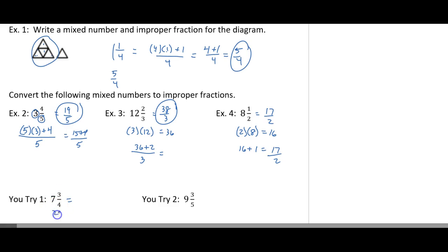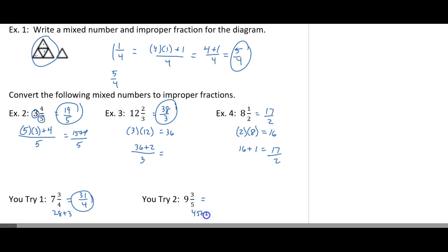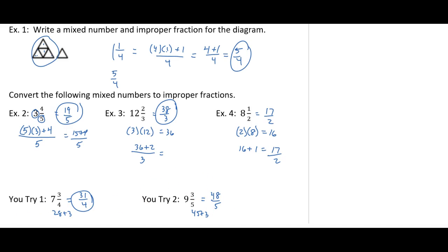For the U-tries: 4 times 7 is 28, plus 3 is 31 over 4. Then 5 times 9 is 45 plus 3, giving you 48 over 5. Go ahead and do this homework assignment and we'll talk about it later on if you have any questions.